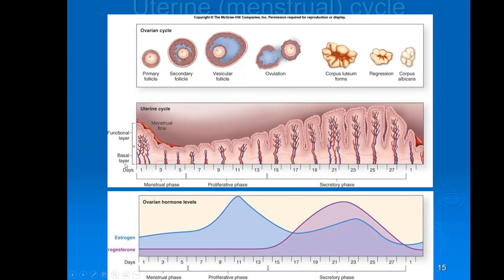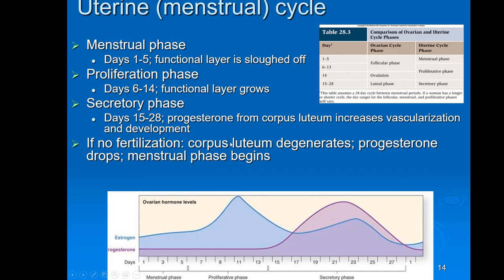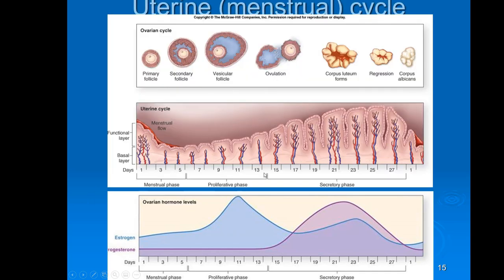With no fertilization, the corpus luteum breaks down, progesterone drops, and the menstrual phase begins again. Diagrams show the development of the follicle and ovulation in relation to hormone levels. The corpus luteum produces lots of progesterone, and you can see the uterine lining: during the menstrual phase the functional layer comes off, during the proliferative phase it grows back thicker, and with no fertilization it comes off and the cycle starts over.